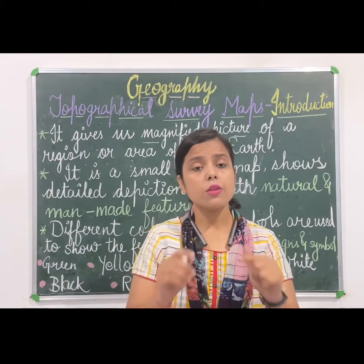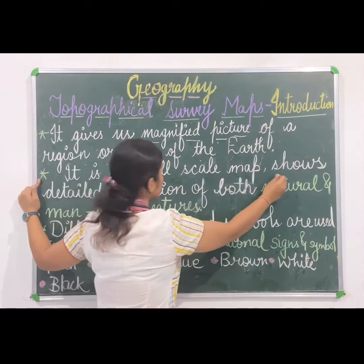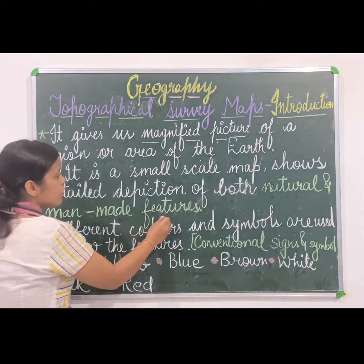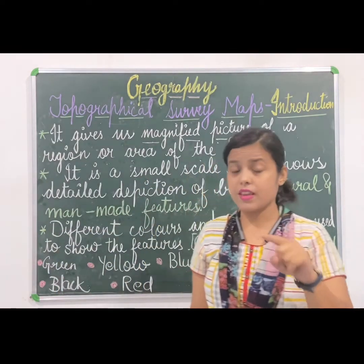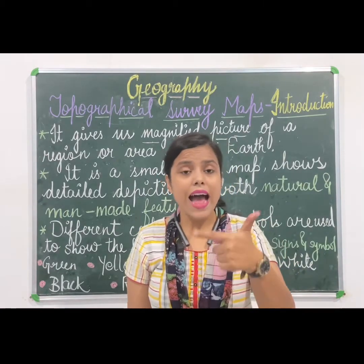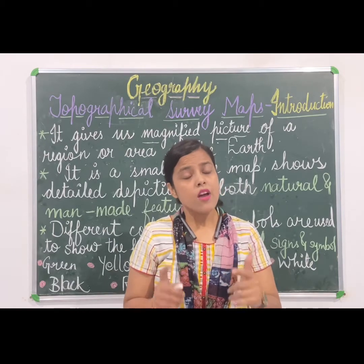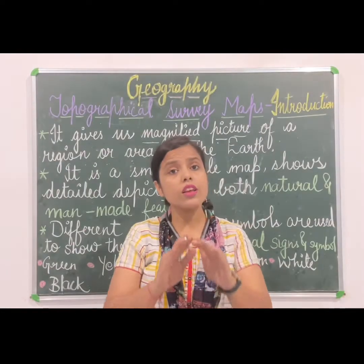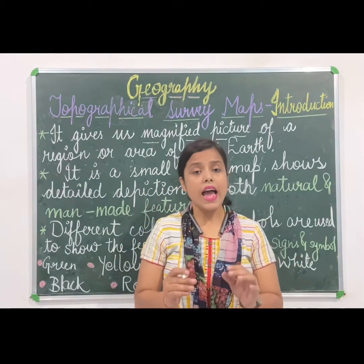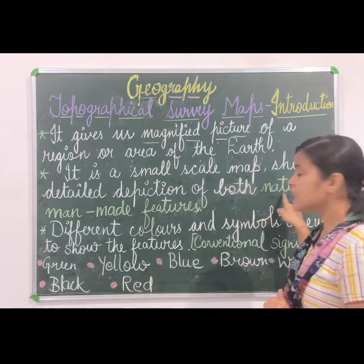All the important features of that area are shown in a more perfect way. The second point is it is a small scale map that shows a detailed depiction of both natural and man-made features. As you studied in class 6th, there are two types of maps: large scale map and small scale map. A large scale map covers a small area in detail, showing all features, while a small scale map covers a large area showing only the important features.